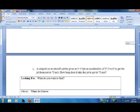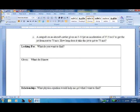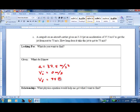Next problem. A catapult on an aircraft carrier gives an F-14 jet an acceleration of 37.5 meters per second squared. So we actually know the acceleration this time. It gets the jet from rest to 75 meters per second. So rest, v initial equals 0 meters per second. And v final, 75 meters per second.